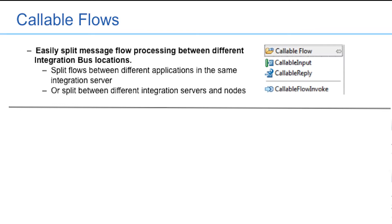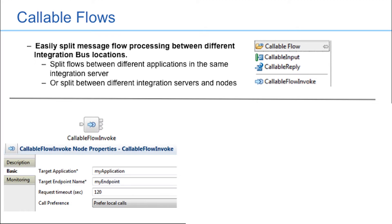A new Callable Flow drawer is added to the message flow palette, which contains the three message flow primitives provided with this feature. A Callable Flow Invoke node is used in the flow from which you wish to invoke another flow. The Callable Flow Invoke node is configured with the name of the application where the flow to be called resides.